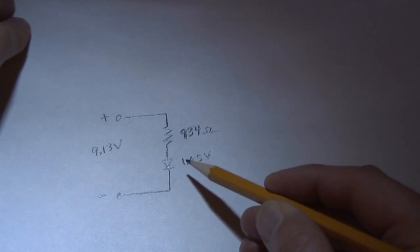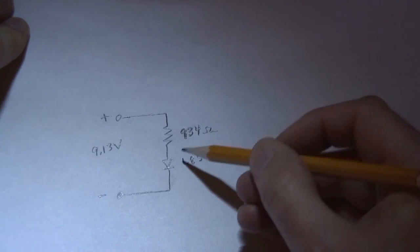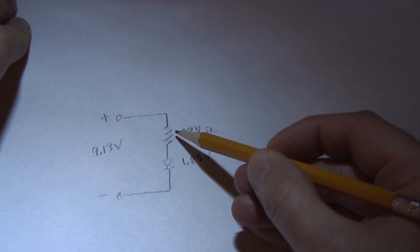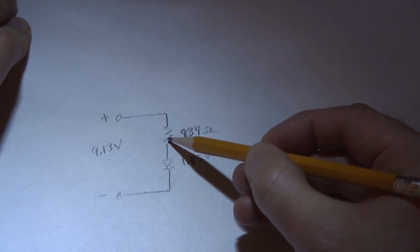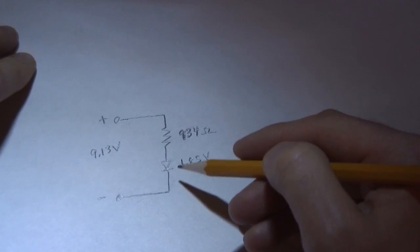We can measure the current going through the LED by measuring the current going through the resistor. Since the resistor and the LED are in series, the current that goes through the resistor must go through the LED. It's the same current.